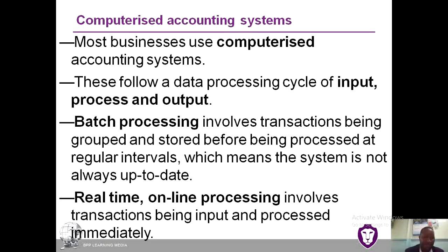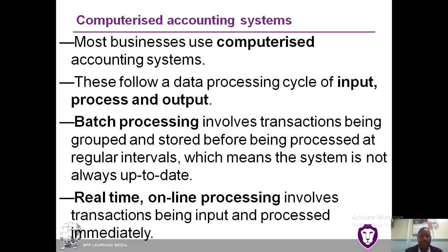Batch processing involves processing transactions at time intervals, while real-time processing means transactions are processed immediately when they occur. An example of real-time processing is the point-of-sale system in supermarkets. An example of batch processing is how checks are processed in a bank — checks are collected from morning until afternoon, and then tellers process them all at a set time.